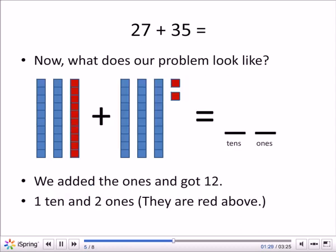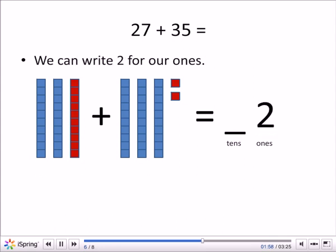So now what does our problem look like? We took away all the blue ones, we added them together, and we got 12. I colored it red so you could see that. We added the 7 one-blocks and the 5 ones, and we got 12 blocks — and we write that as 1 ten and 2 ones. There's 1 ten and 2 ones. You can see that in the red. So we have 2 ones now in our answer — there's only 2 ones. So we write that in the 1s spot.